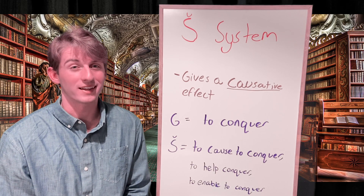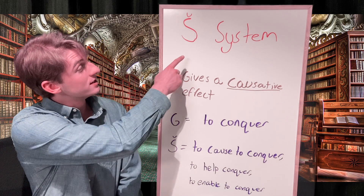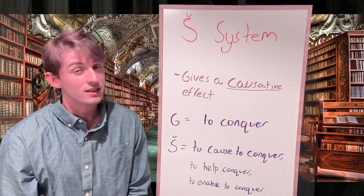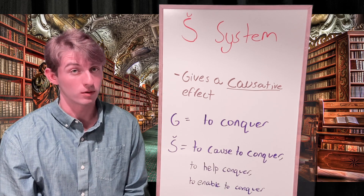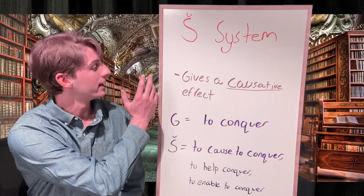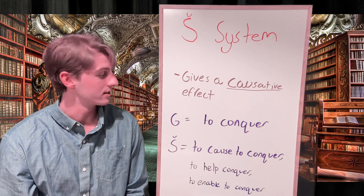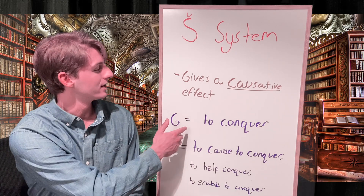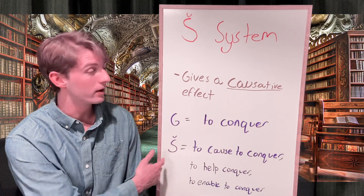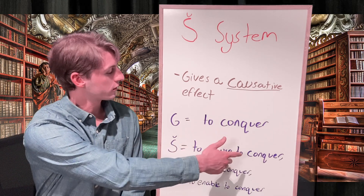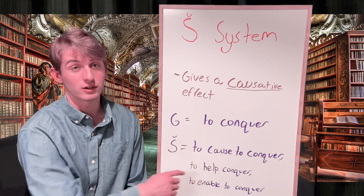Hello and welcome back to Learn Akkadian. Today we're going to talk about the Sheen system. The Sheen system is the last of our four main verbal forms and it gives verbs a causative effect. So what appears in the G system with the meaning 'to conquer' in the Sheen system would appear with the meaning 'to cause to conquer,' 'to help conquer,' or 'to enable to conquer.'